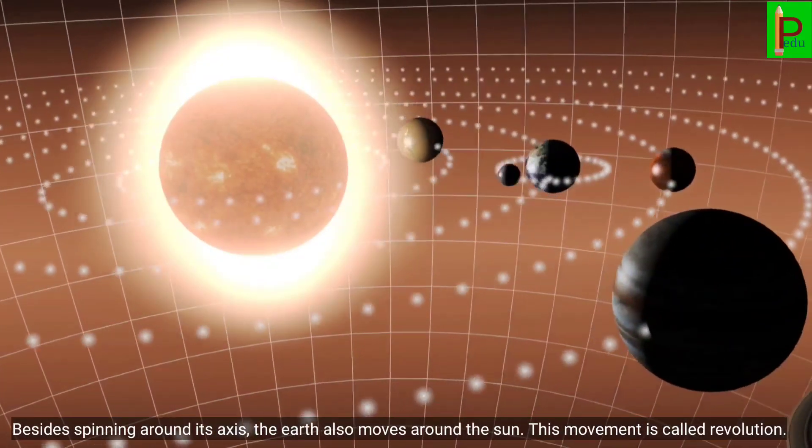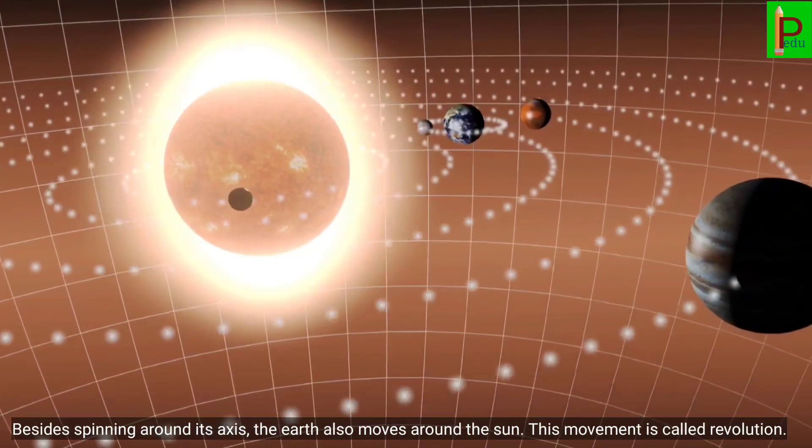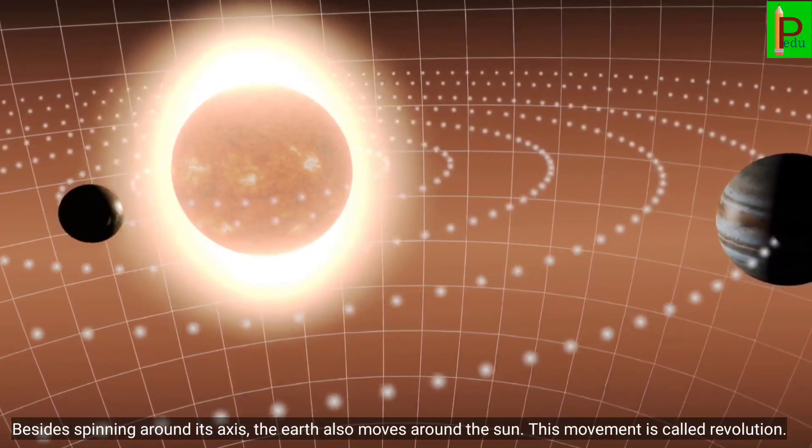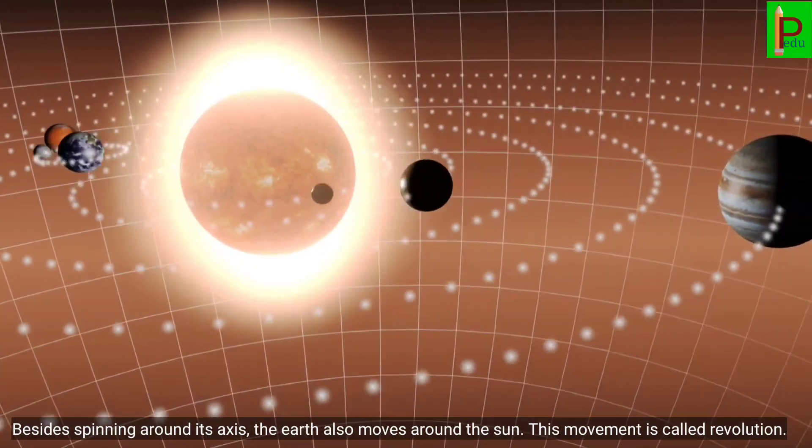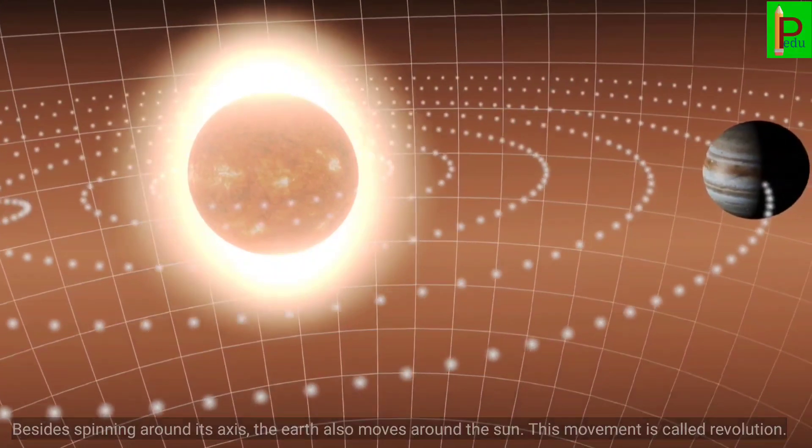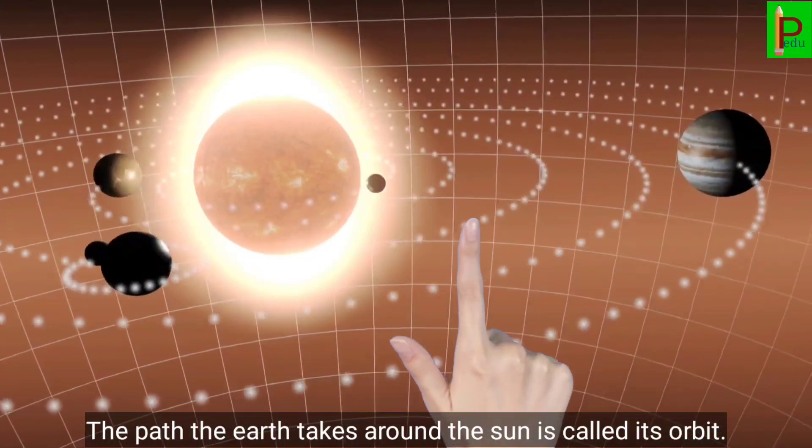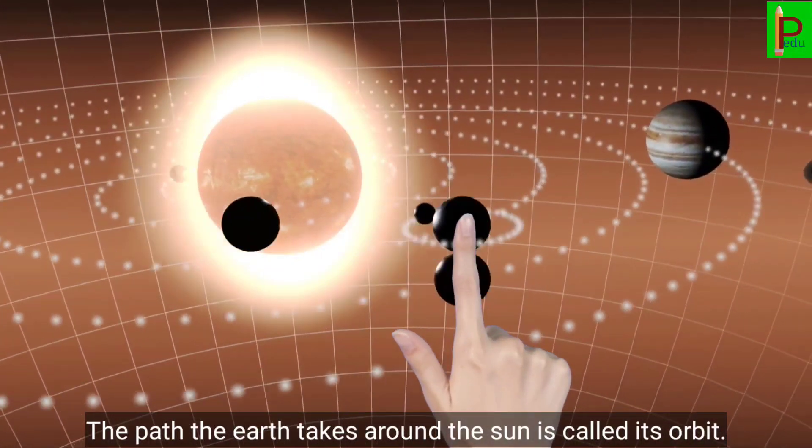Besides spinning around its axis, the earth also moves around the sun. This movement is called revolution. The path the earth takes around the sun is called its orbit.